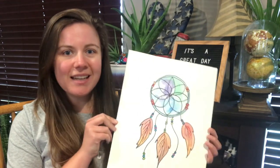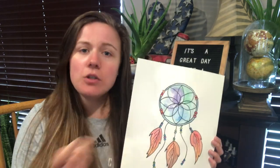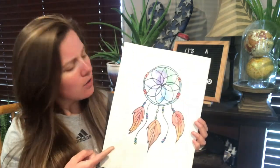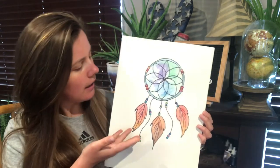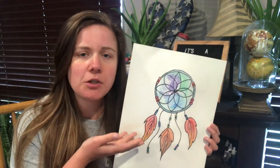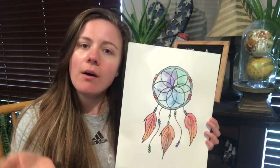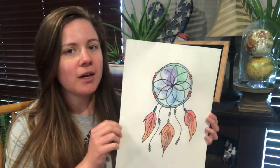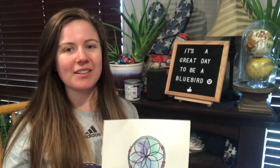Alright guys we did it. Good job. We have made our dream catchers. So what colors did you use? Did you use warm and cool colors like I did or did you use different type of colors? What type of feathers are hanging off of your dream catcher? Are they owl feathers or eagle feathers? Let me know what is on your dream catcher. Share with me your finished dream catcher on our Facebook page. Until next time, it's a great day to be a bluebird. Bye!